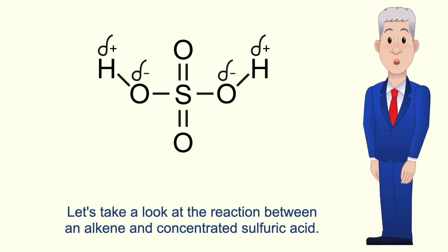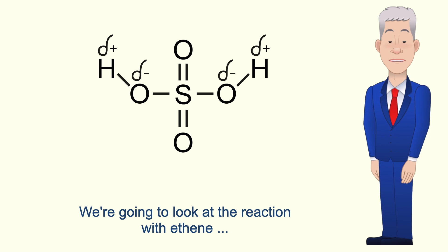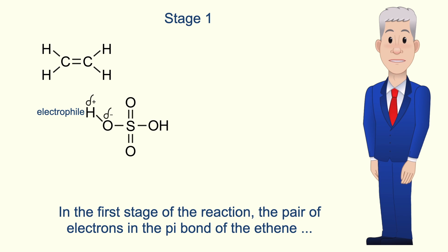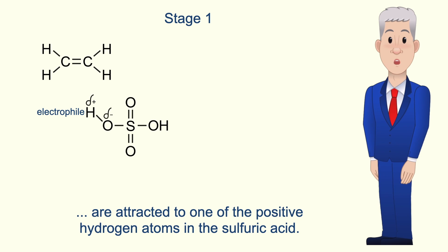So let's take a look at the reaction between an alkene and concentrated sulphuric acid. We're going to look at the reaction with ethene, but this would apply to other alkenes. In the first stage of the reaction, the pair of electrons in the pi bond of the ethene are attracted to one of the positive hydrogen atoms in the sulphuric acid.